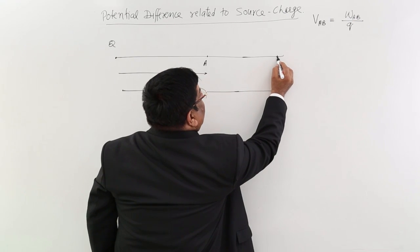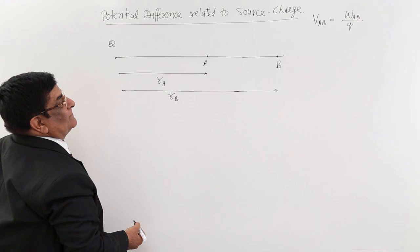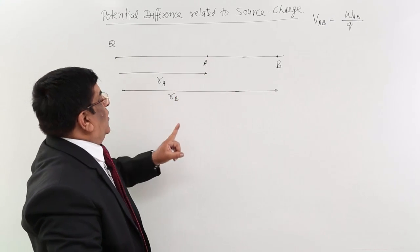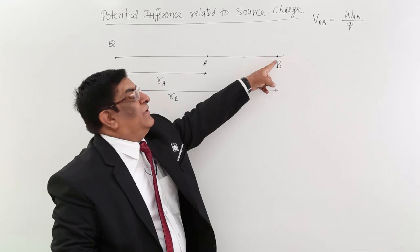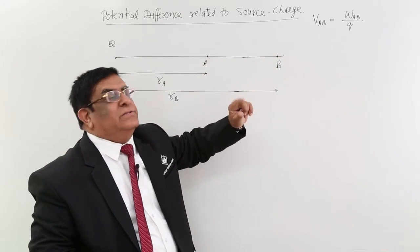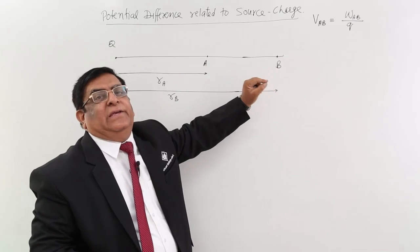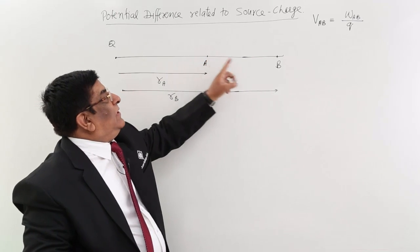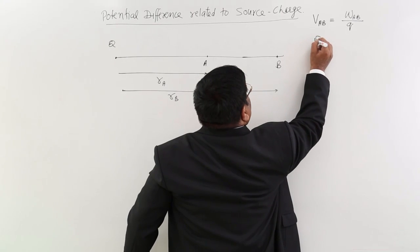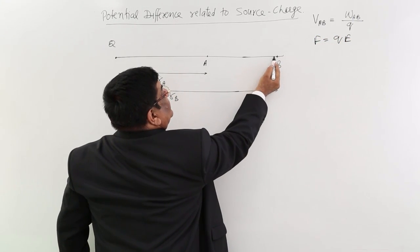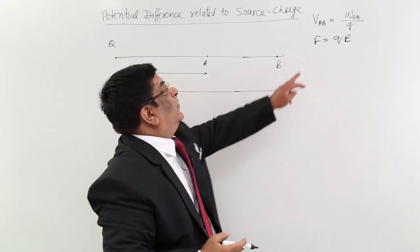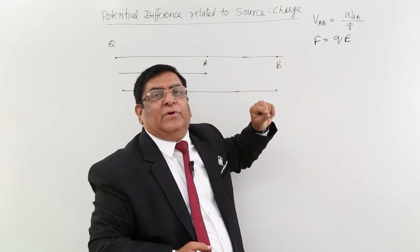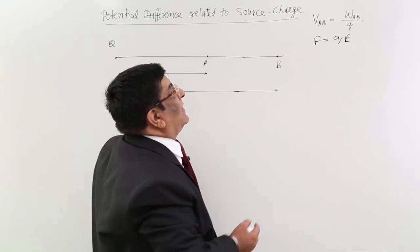Now I place one test charge Q here and it experiences a force. When R is small, the electric field will be stronger; when R is large, the electric field will be weaker. There is a change in electric field. Since uniform electric field is not there, I cannot multiply force with distance, because force everywhere will change. We know the formula for force is Q into E, and this E is changing from this point to this point — so at every point, force will be different.